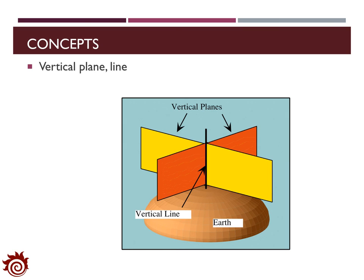Now we can define the vertical plane and line. The vertical line is defined first in order to identify the vertical plane. The vertical line is a line which is perpendicular to the horizontal plane on the Earth and goes through the standing point. Once we define the vertical line, any plane which crosses the vertical line is defined as a vertical plane. For one vertical line, you can create an infinite number of vertical planes.